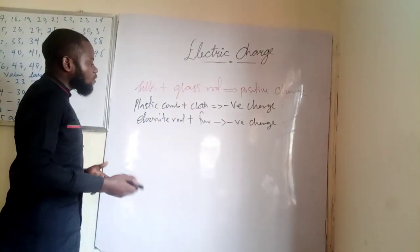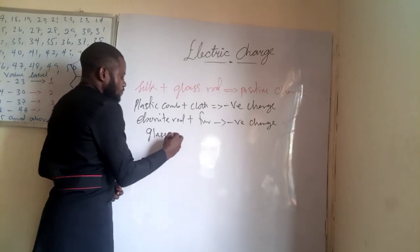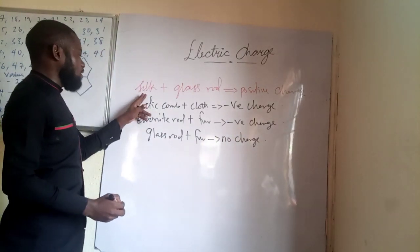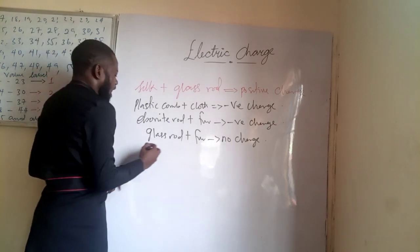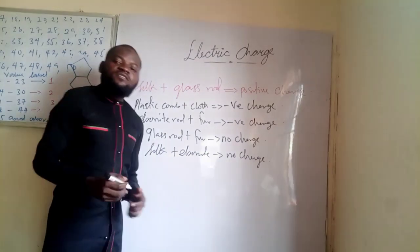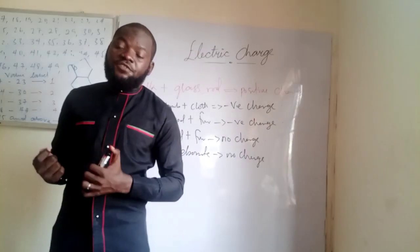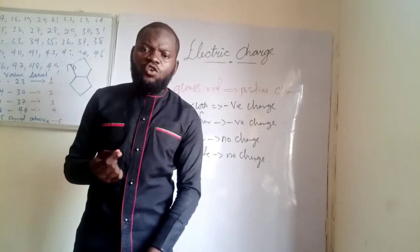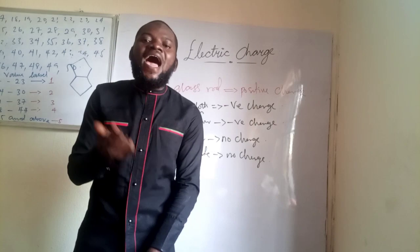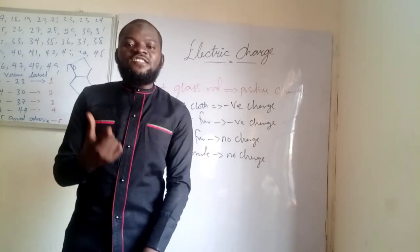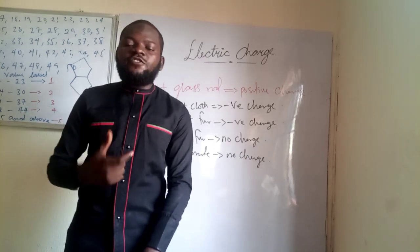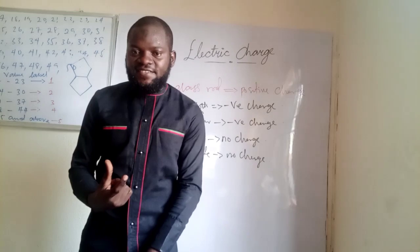However, if you rub a glass rod with fur, there will be no charge. Similarly, silk with an ebonite rod will produce no charge. The atomic theory of charge acquisition states that charge cannot be created or destroyed, but it can be acquired when the excess electrons in the donor atom transfer to the acceptor atom. When there is no excess electron, no charge acquisition takes place.